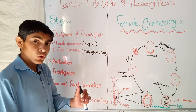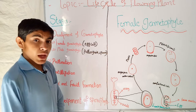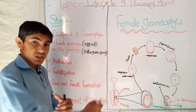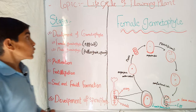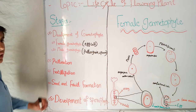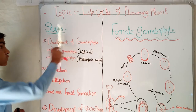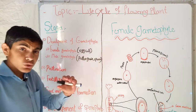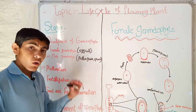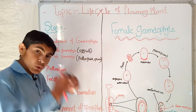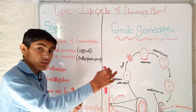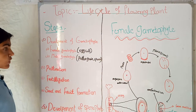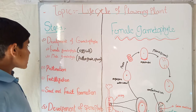A flower goes through several stages during its growth for the production of the new generation. A flower has to go through these stages to reproduce the next generation. The first stage in the life of the flower is the development of the gametophyte — the reproductive or generative cell of the plant. There are two types of gametophyte: the female gametophyte and the male gametophyte.